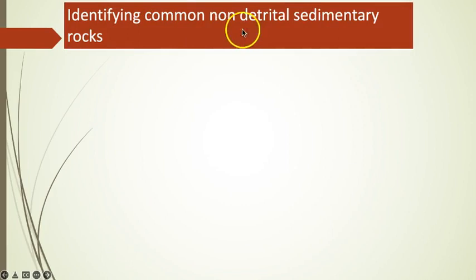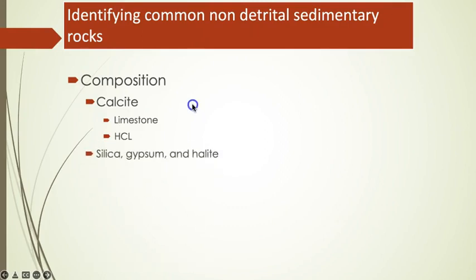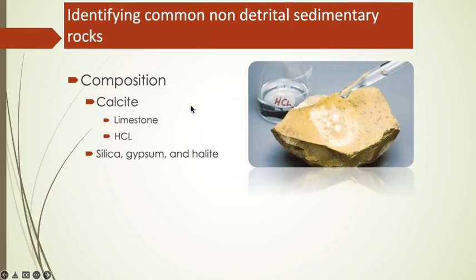Chemical sedimentary rocks do not contain grains, so clast size, sorting, and shape are not used when describing the texture. Instead, composition is the primary criteria used to name chemical sedimentary rocks. Calcite is the most common composition, making up the most common types of chemical sedimentary rocks: limestones. Since limestones are made of calcite, all will react with hydrochloric acid, as has already been demonstrated in this class. Other common compositions include silica, gypsum, and halite.